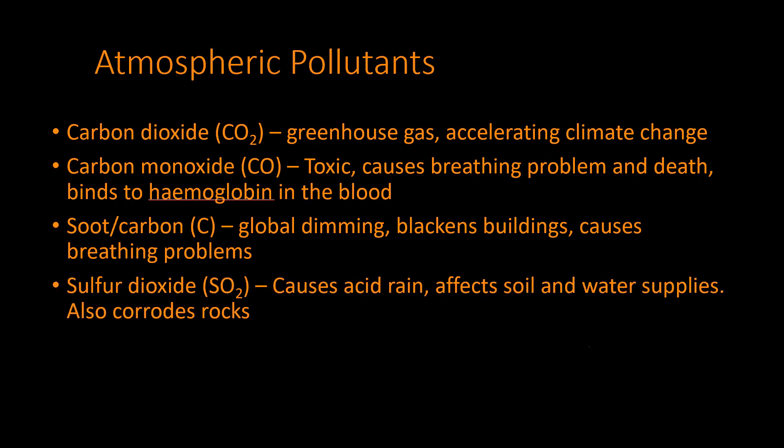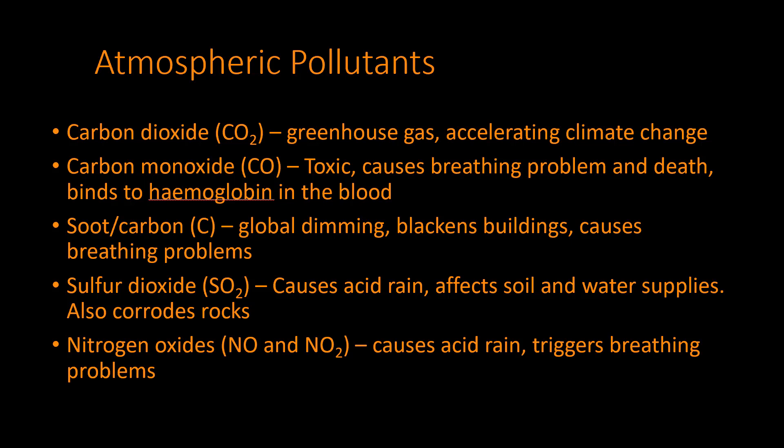Sulfur dioxide (SO₂) dissolves in water in the air and forms sulfuric acid, which then rains down causing acid rain. Acid rain is a particular problem for rocks made of calcium carbonate such as limestone, causing corrosion. More importantly, acid rain entering soil or water supplies causes a drastic change in pH, which can affect what can grow there and can cause organisms to die.